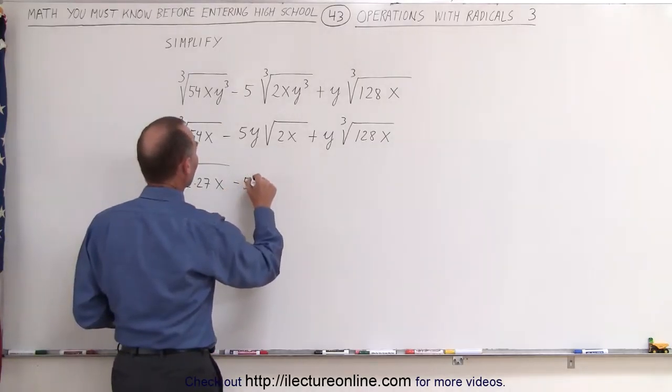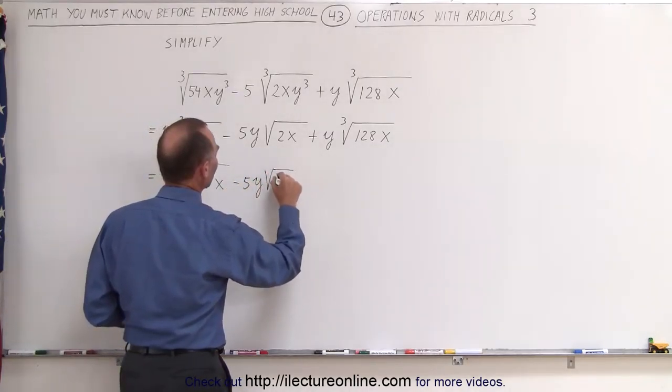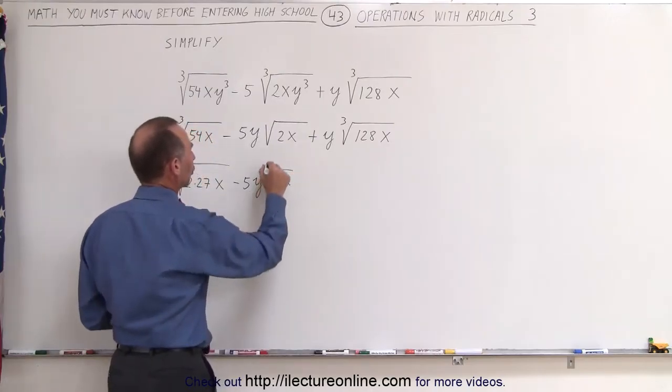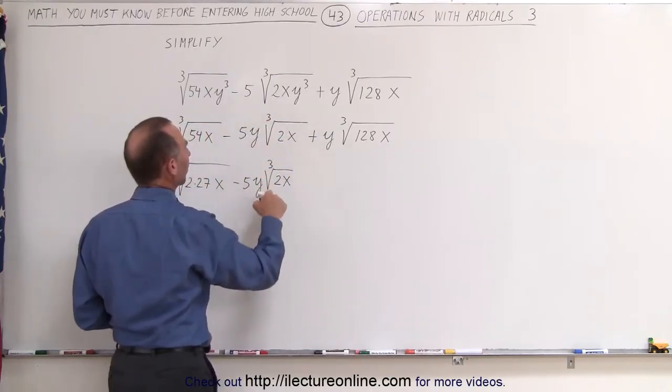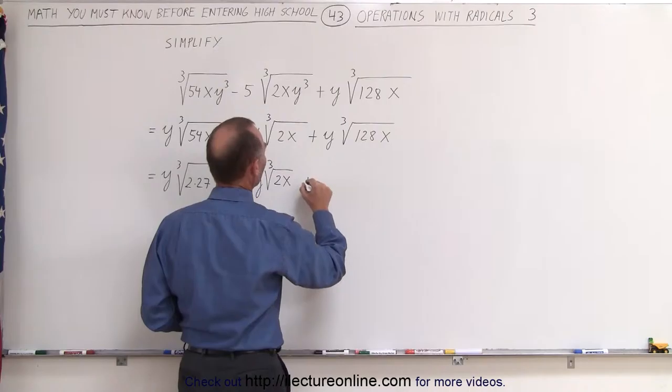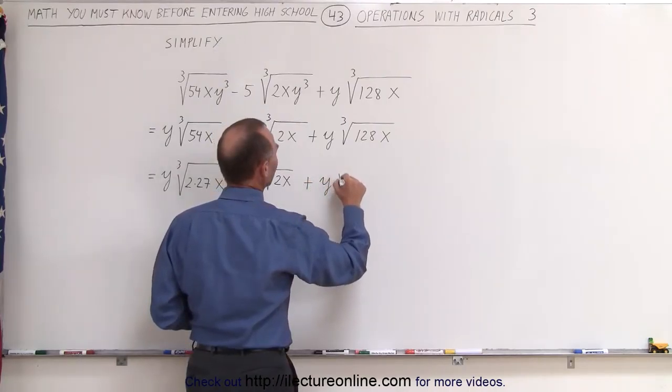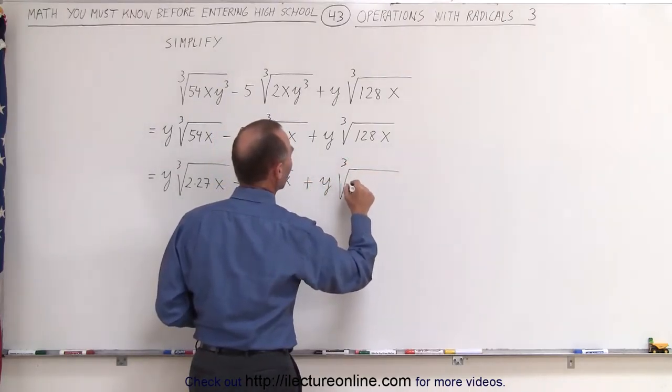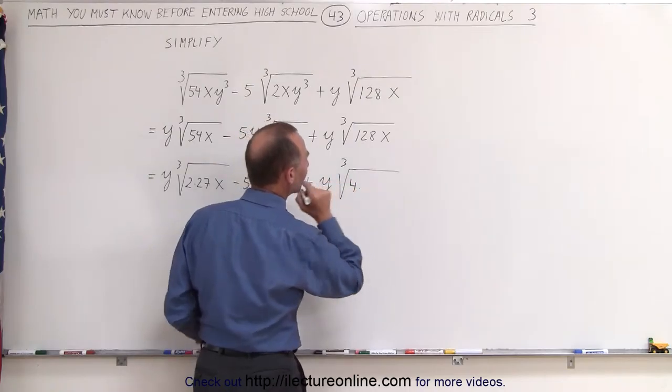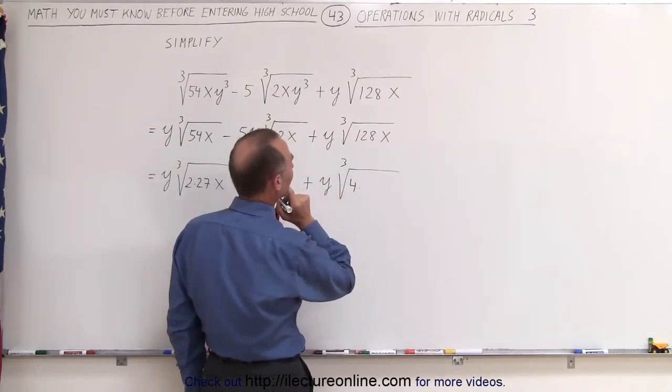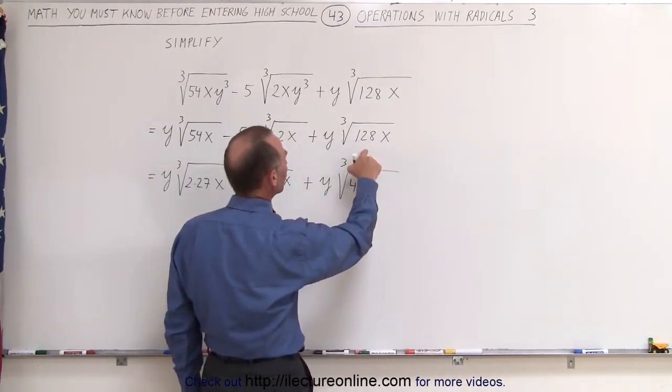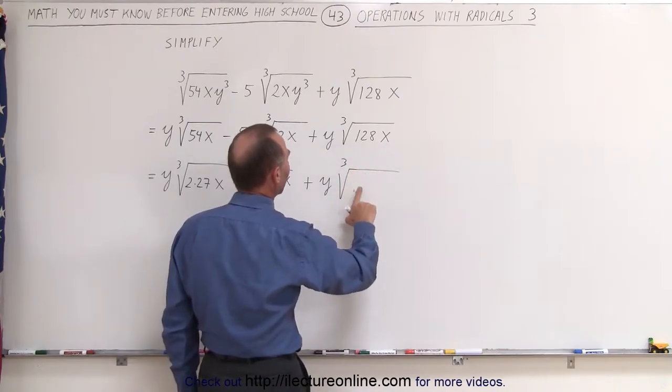minus 5y, here we cannot do anything, we'll just leave it as the cube root of 2x, and here plus y times the cube root of, and here we can write this as 4 times, let's see here, 4 times 62, oh, let's take that back,